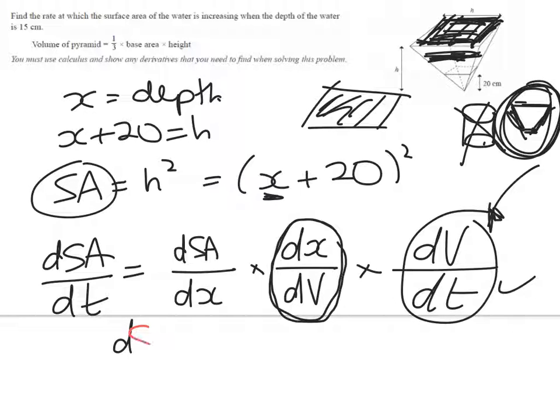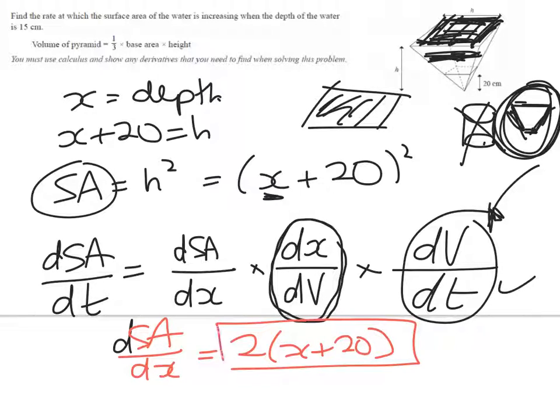We can get the next one. dSA/dx is equal to 2 times x plus 20. That one's pretty easy. That's from here. You could have expanded that out, but you're just going to end up factorizing at the end anyway.